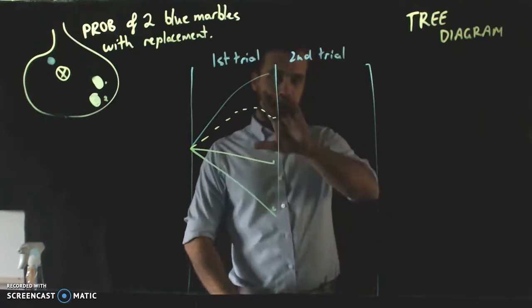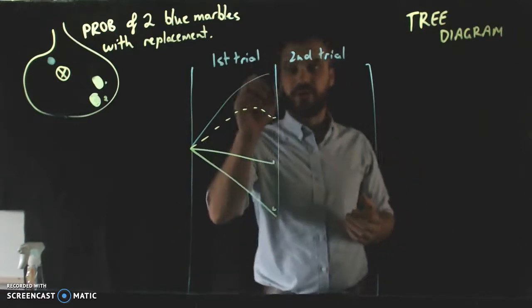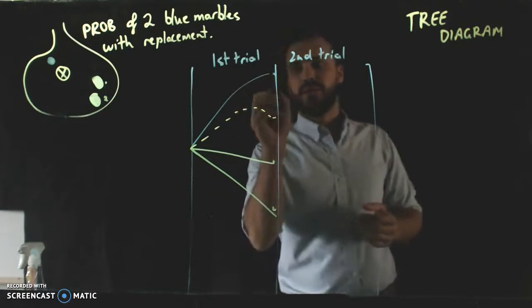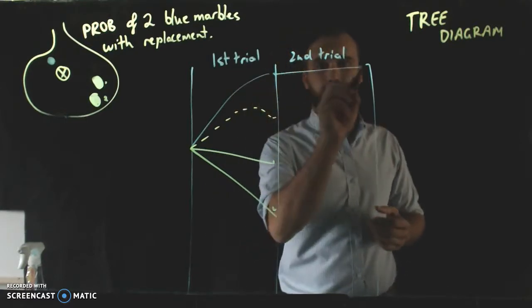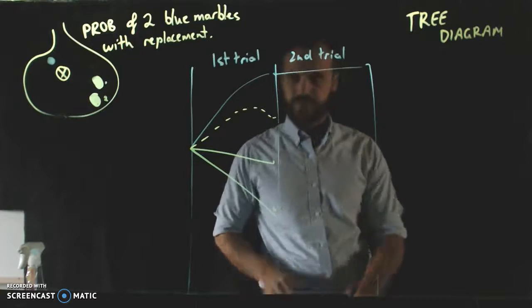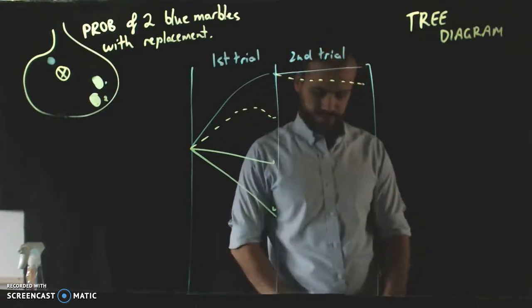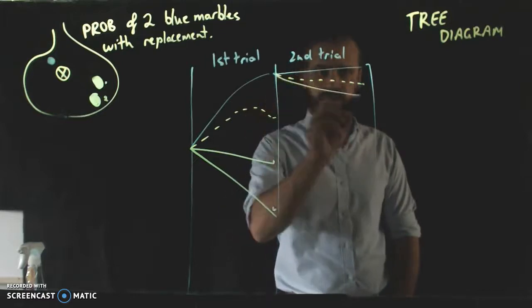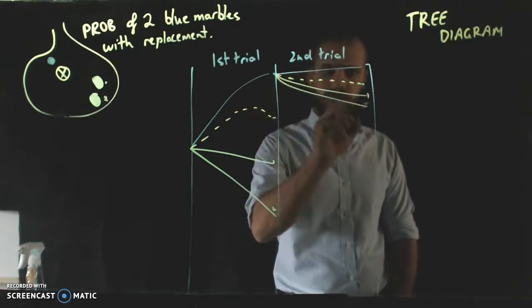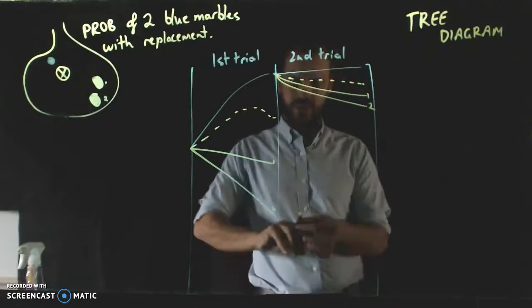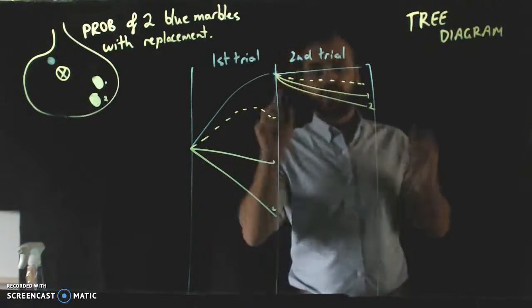Now, in our second trial, we do the same thing all over again for each one. So, a blue one, a dotted one, one, two. And we continue on with this for each universe.